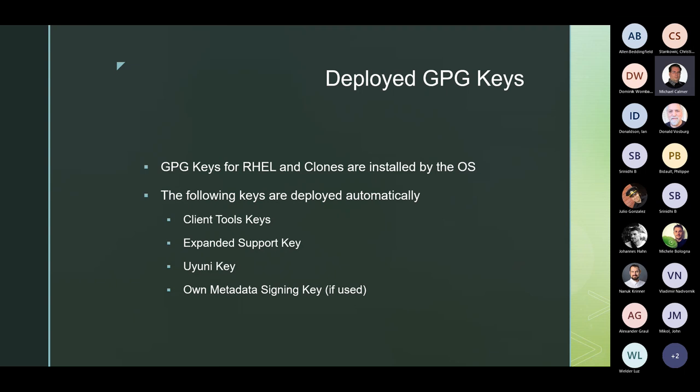With deployment, we just mean that we copy the file to the client and make it available under a specified location. It does not mean it gets automatically trusted — that is a different mechanism. Deploying the key to the client does not automatically make it trusted. You can deploy any keys there into the directory, but only keys which are actually used in an assigned channel will be trusted.